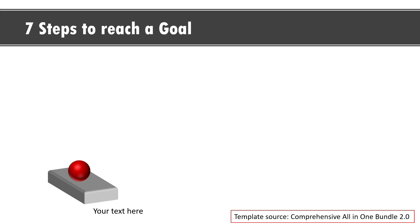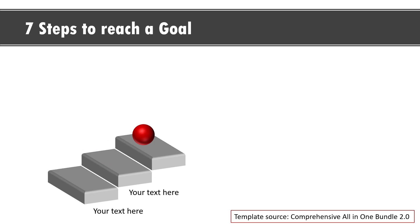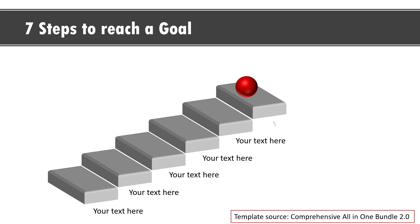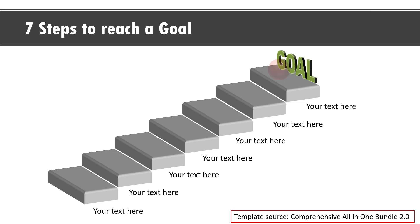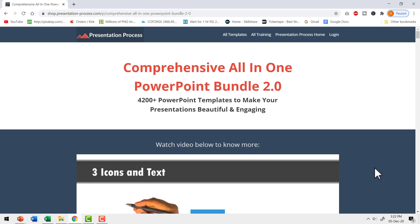On a click we show the viewers the first step, then the second step, then the progression to the third, fourth, fifth, sixth, and finally to the goal. What you saw were just five of the 4,200 plus professionally animated templates from this bundle. I will leave a link in the description box below the video — you can make a one-time purchase and use these templates for a lifetime.